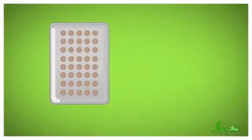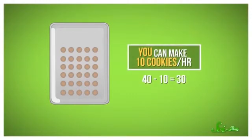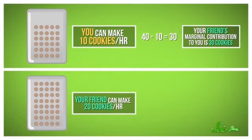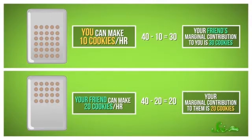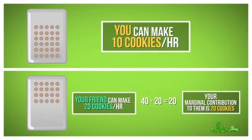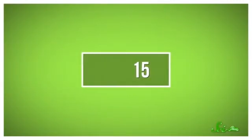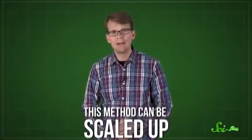The Shapley value equation tells you to think about it like this. If you take the fact that you can make 10 cookies an hour and subtract that from the total, that gives your friend credit for the other 30 cookies — that's their marginal contribution to you. But if you take the fact that your friend can make 20 cookies an hour and subtract that from the total, that gives you credit for 20 cookies, because your marginal contribution to your friend's system is 20 cookies. In the first case your value was 10 cookies; in the second it's 20. According to the Shapley value equation, you average those two numbers: 10 plus 20 is 30, divided by 2 is 15. So you should get $15, and your friend should get $25. This method can be scaled up to coalitions with hundreds of players by finding their marginal contributions to every other player and then calculating the average of all those numbers.